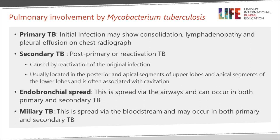Secondary tuberculosis is when the TB reactivates — it can be called either reactivation or post-primary TB, they're the same thing. For some reason the host's immunity has reduced slightly and the infection takes hold again. Typically or classically this is in the upper parts of the lung, either in the apical segments of the upper lobe or in the apical segments of the lower lobes, with an area of cavitation as the TB destroys the adjacent lung.